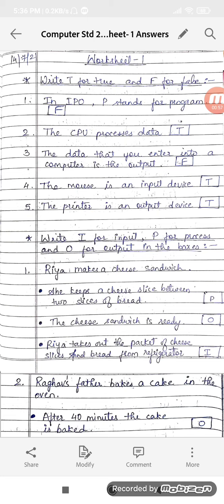So the answer will be false. The mouse is an input device. Yes, it is true. Printer is an output device. Yes, it is true. We get information outside the computer.